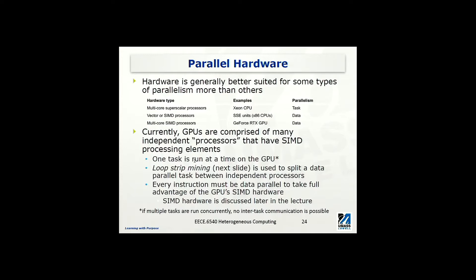Other kinds of processors, so-called vector or SIMD processors, are designed to take advantage of data parallelism. For example, in x86 CPUs, there are SSE units which can perform very long vector operations in parallel. Also, people have been using multicore SIMD processors, and GPUs are representative processors in this category — they are best for data parallelism tasks.